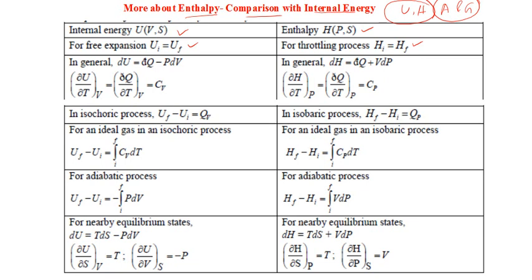Throttling is a special kind of adiabatic expansion with pressures on both sides maintained constant — unlike free expansion where internal energy remains constant. For an isobaric process, the relation is ΔH = Cp × (Tf − Ti), the same equation we just derived. All these equations are summarized in the table — compare them yourself to consolidate the concepts.